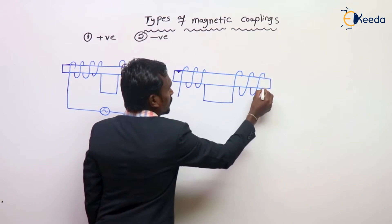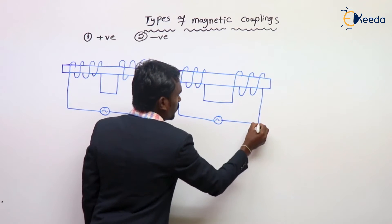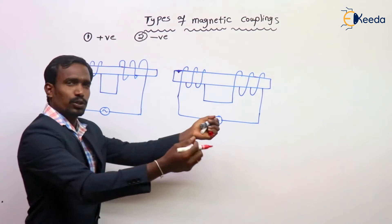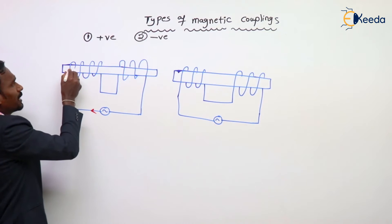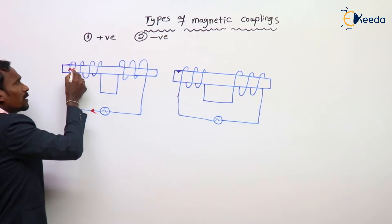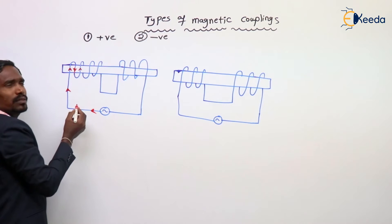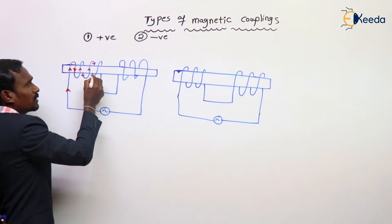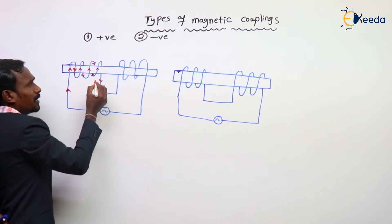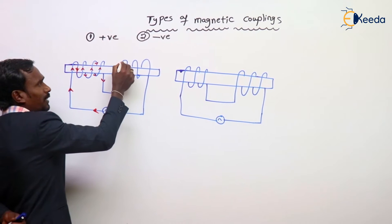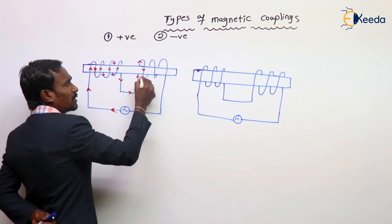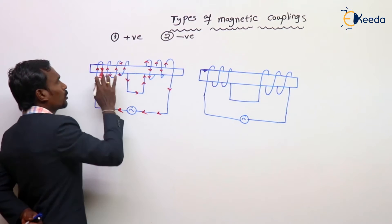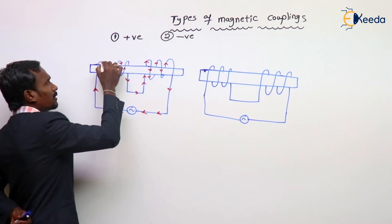See the winding pattern — it is very different, these two are not same. When supply is given, see the current direction: up direction, down direction, again up direction, again down direction, up direction, down direction, and up direction. Inside up direction, here down direction — this is a closed loop. Here down direction like this.